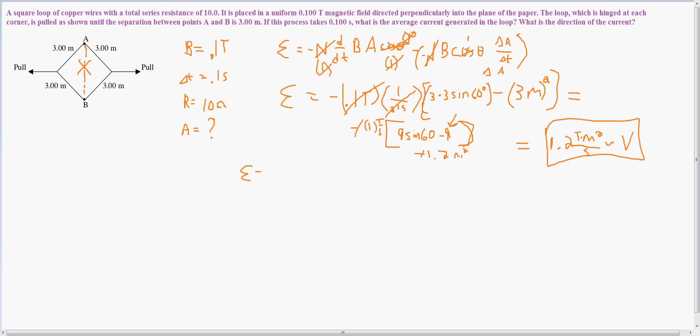Okay, now that I have the potential, I take V equals IR, Ohm's law. So I have these two, which gives me the current. So I have 1.2 volts divided by 10 ohms, which is equal to 0.12 amps. And that would be the answer to the average current in the loop.